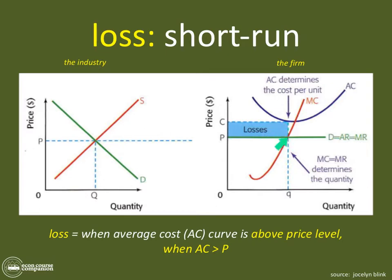That is how to show a loss in the short run for perfect competition. Now here's the catch — this is not going to persist. In perfect competition, we have the notion of perfect information, and firms have practically no barrier to entry or exit. So if firms are making losses, they are leaving this industry. Why would they continue to produce when they're losing money? So how would we represent that?